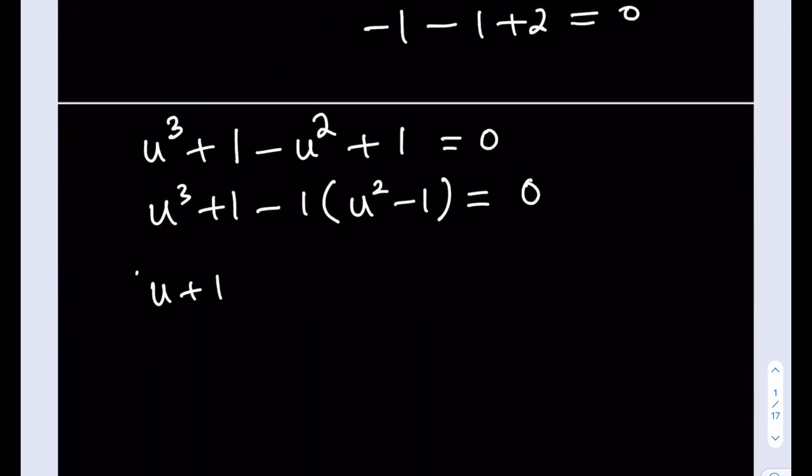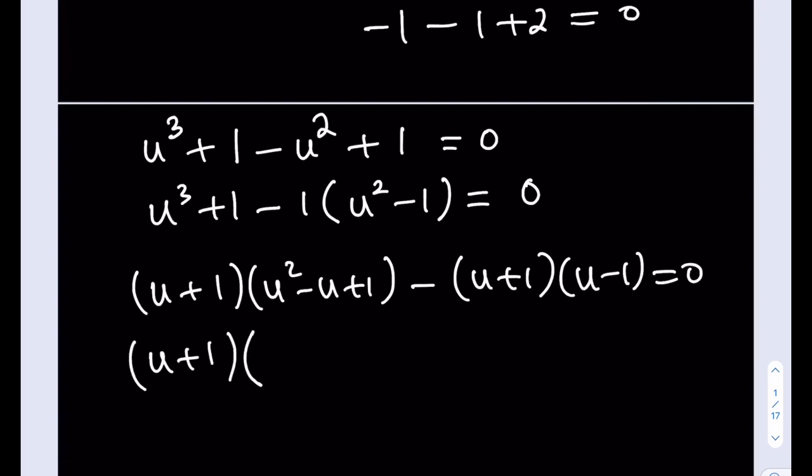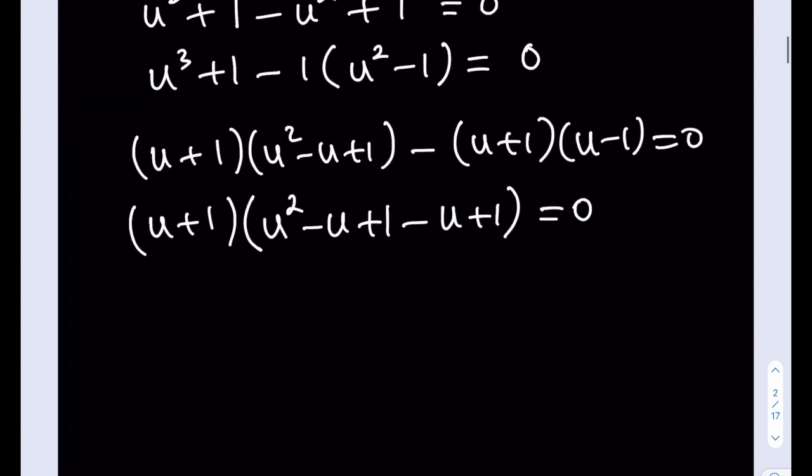Let's go ahead and factor this: u plus 1 multiplied by u squared minus u plus 1. And the other expression can be factored as u plus 1 multiplied by u minus 1. Great. So now we can take out the u plus 1, and then the other factor is going to be u squared minus u plus 1 minus u plus 1. Be careful here. We're not canceling out any of the terms. But notice that u equals negative 1 is a solution, and the other solution is going to be coming from the quadratic. Let's go ahead and simplify that: u squared minus 2u plus 2.